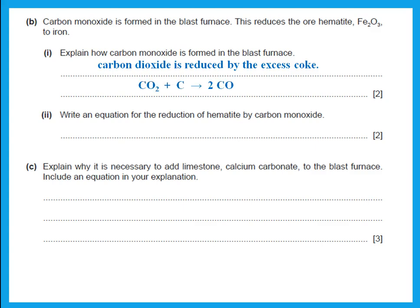Carbon monoxide is formed in the blast furnace when carbon dioxide is reduced by excess coke. Write an equation for the reduction of hematite by carbon monoxide. When he says write an equation, he means a balanced chemical symbol equation, not a word equation — if he wanted a word equation, he would say so. This is the balanced chemical equation for the reduction of hematite by carbon monoxide.